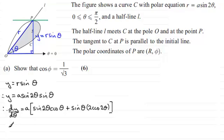Now we know that at P, the value of Y must be a maximum. So at P, we know that dy/dθ must equal 0. And we also know that at P, the coordinates of P are R φ, so that means that θ must be equal to φ. So we just need to substitute our values in to our equation.